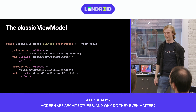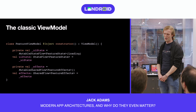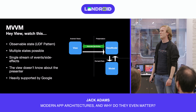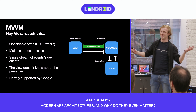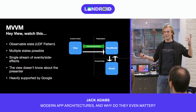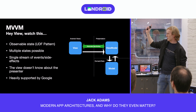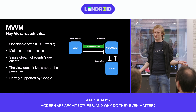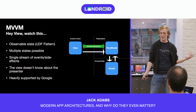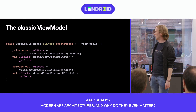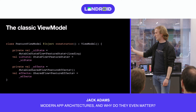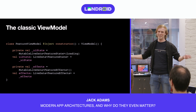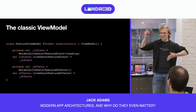The classic ViewModel. One of the things I really want to talk about is that an architecture is about principles and ideas. MVVM's principles are: observable state, stream of side effects, view doesn't know about the presenter. There are also implementation details — you can have one state or many states, you can use StateFlows, SharedFlows, Channels, or even LiveData if you really want to. It's all MVVM; they're just implementation details.